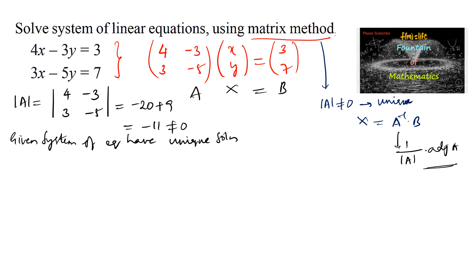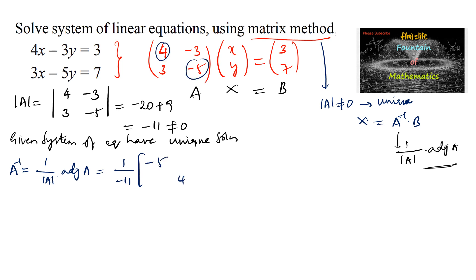Now A inverse equals 1 over det(A) times the adjoint of A, that is 1 over negative 11 times the adjoint. The adjoint is found by interchanging the diagonal elements negative 5 and 4, and changing the signs of the non-diagonal elements, so negative 3 becomes 3 and positive 3 becomes negative 3.